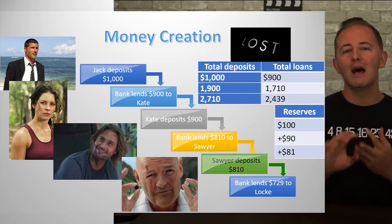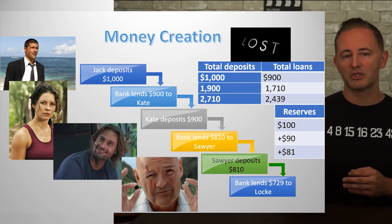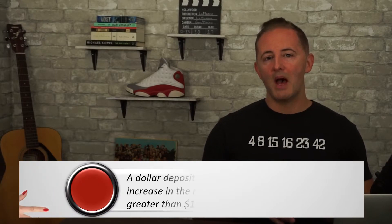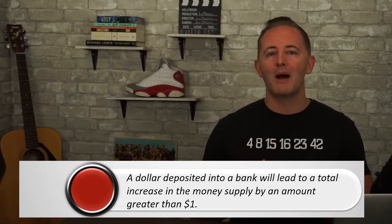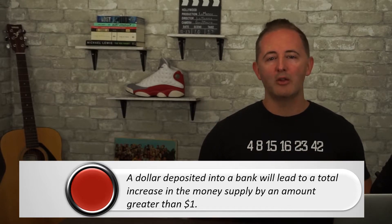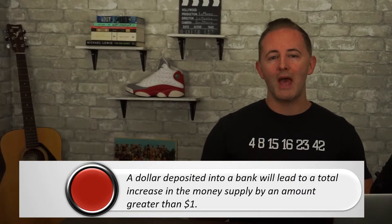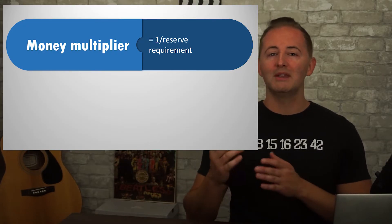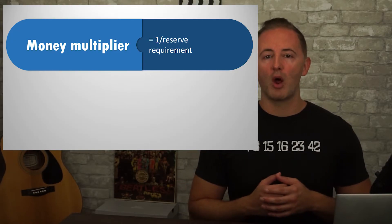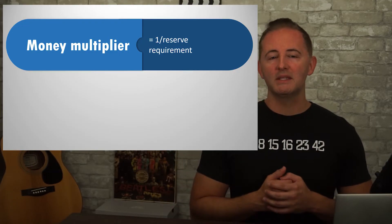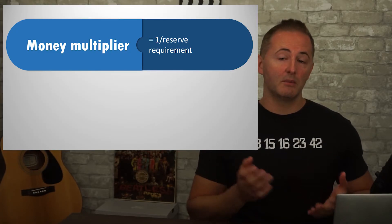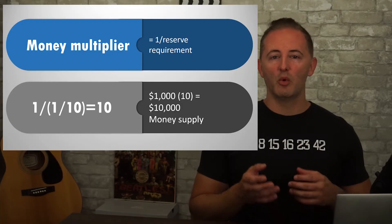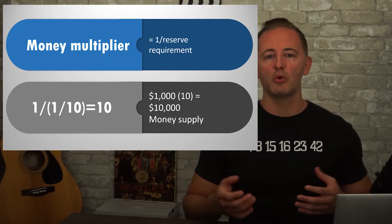The money that Kate, Sawyer, and Locke have would not exist without Jack's deposit. By lending their excess reserves, the bank has, in a very real way, created money. One implication is that a dollar deposited into a bank will lead to a total increase in the money supply by an amount greater than $1. There's an easier way to calculate the maximum total change in the money supply using the money multiplier — not to be confused with the expenditures multiplier from Unit 3. The money multiplier is 1 divided by the reserve requirement, also called the reciprocal of the reserve requirement. If the reserve requirement is 10%, then 1 divided by 1/10 equals 10. So our money multiplier is 10. Our initial deposit was $1,000, multiply that by 10, and the money supply now equals $10,000.